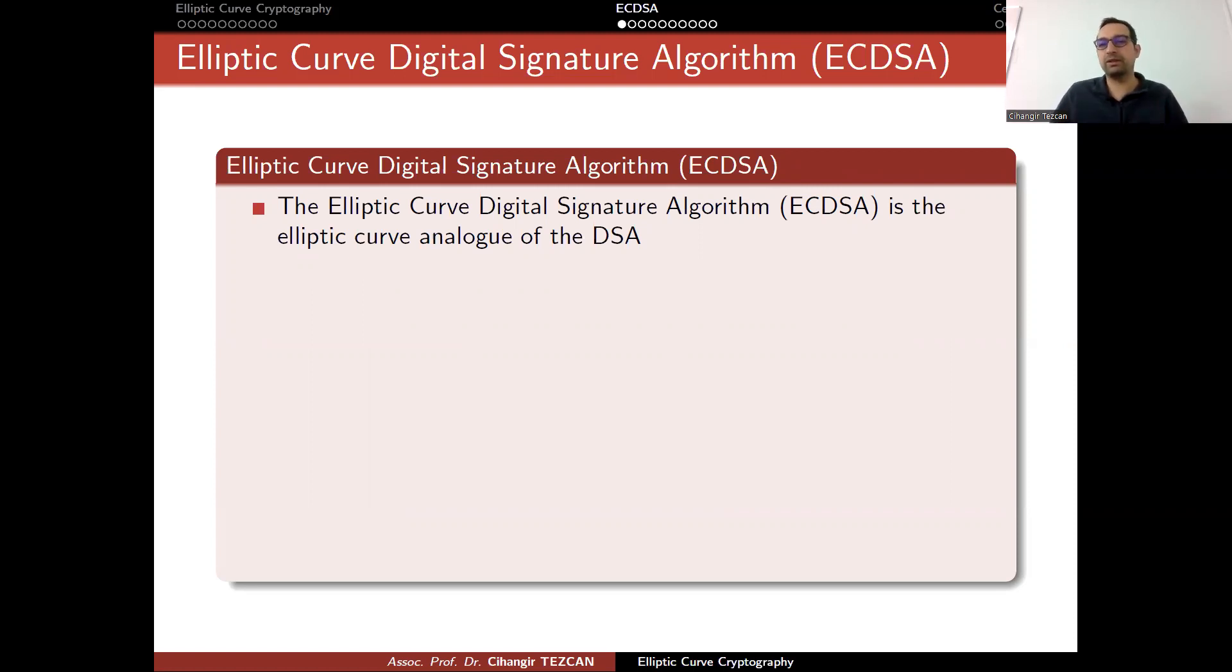It is actually the analog of digital signature algorithm on elliptic curve. Our operations instead of numbers will be on elliptic curve points. The elliptic curve digital signature algorithm, ECDSA, is the elliptic curve analog of the DSA. Almost every cryptocurrency uses this algorithm.